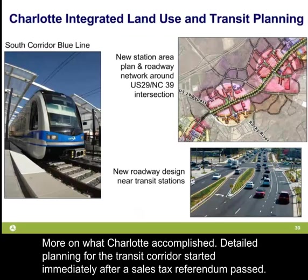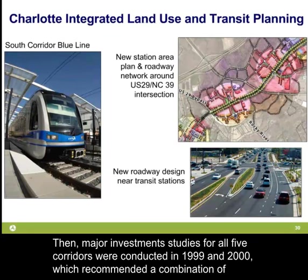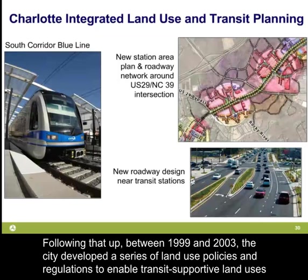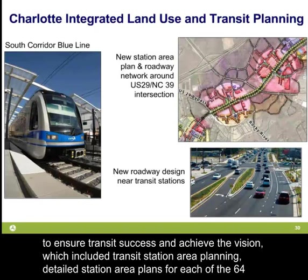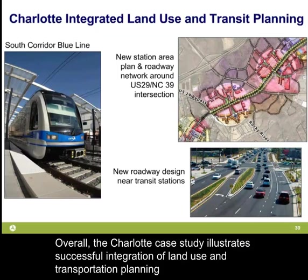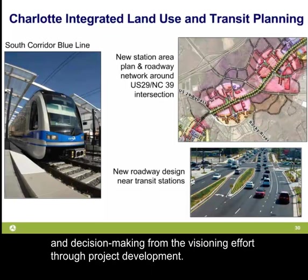Detailed planning for the transit corridors started immediately after a sales tax referendum passed. Major investment studies for all five corridors were conducted in 1999 and 2000, recommending a combination of light rail, BRT, streetcar, commuter rail, and enhanced bus service. Between 1999 and 2003, the city developed a series of land use policies and regulations to enable transit-supportive land uses, including transit station area planning, detailed station area plans for each of the 64 stations, and TOD zoning and other regulatory changes. The Charlotte case study illustrates successful integration of land use and transportation planning from the visioning effort through project development.